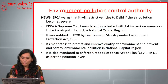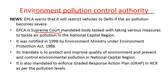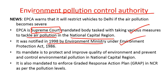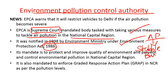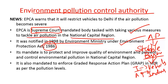The next article is about the Environment Pollution Control Authority. EPCA is a special body constituted by the Supreme Court to take various measures to control the pollution problem in the National Capital Region. This body was notified in 1998 by the Environment Ministry under the Environment Protection Act of 1986. The increasing air pollution in the Delhi area is mainly attributed to stubble burning by farmers, along with increasing movement of vehicles and industrial pollution, which considerably increase harmful pollutants in the atmosphere.